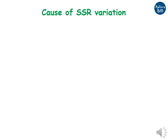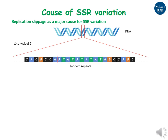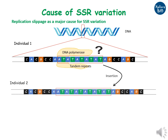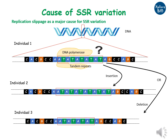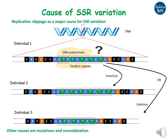The question arises: why do SSRs show variation? One of the main reasons is replication slippage. When DNA polymerase tries to replicate the repetitive DNA, it gets confused and may lead to addition or deletion of one or more repeats. DNA polymerase finds it difficult to read 80 repeats and may increase or decrease SSR length in individuals 2 and 3 respectively.